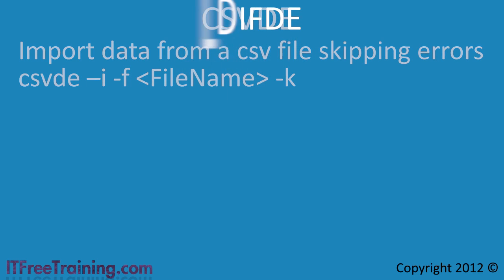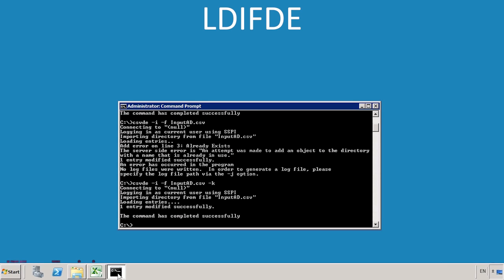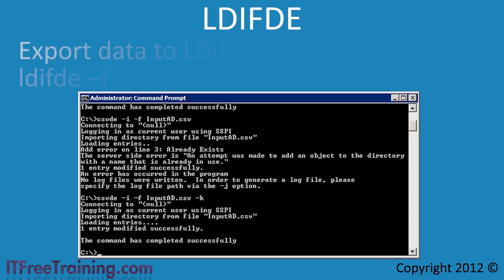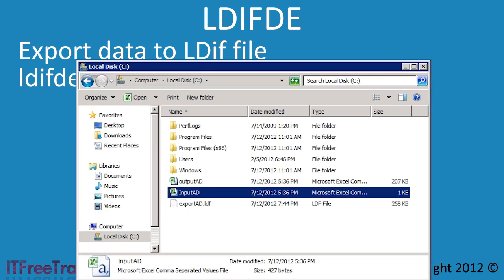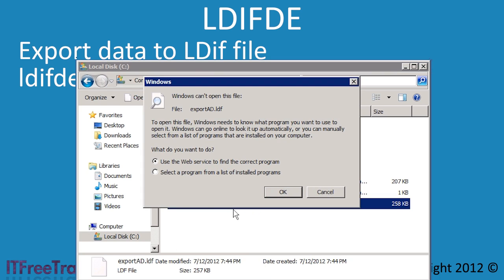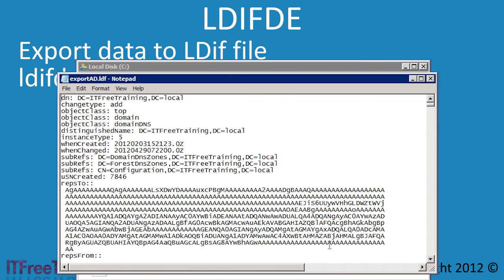The next tool I will look at is LDIFDE. Although LDIFDE exports data in a different format, the parameters for CSVDE and LDIFDE are the same. If I open the command prompt again, I will run LDIFDE with the parameter minus F followed by the file name. This will export all the objects from Active Directory into a file in LDIF format. Now that the data has been exported, I will go back to Windows Explorer and open the file, selecting Notepad when prompted. Notice that the file is text-based like the CSV file, however the format of the file is very different. You can see at the top the attribute DN. Any third party directory system that supports this format will be able to read this file and make use of the data.